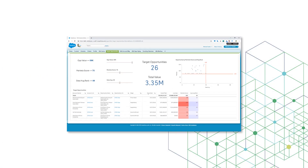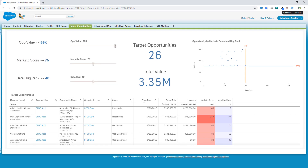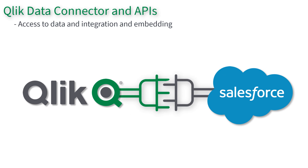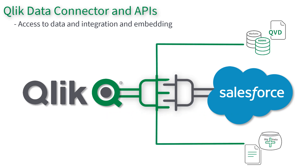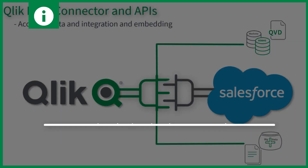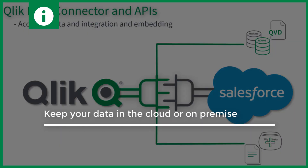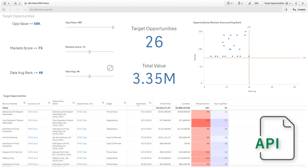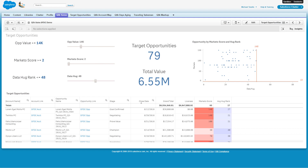First and foremost, the technology to integrate Qlik Sense with Salesforce begins with the Salesforce Data Connector and our APIs. The Salesforce Data Connector allows users to access and combine data from not only Salesforce but from many other data sources, and we don't mandate where your data should be stored — it can be stored in the cloud or on-premise.